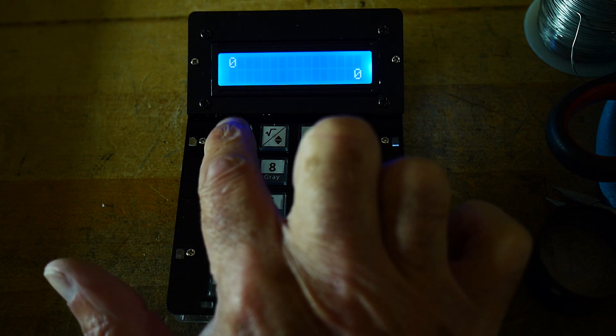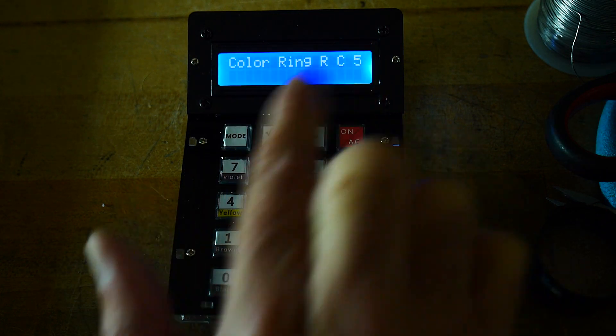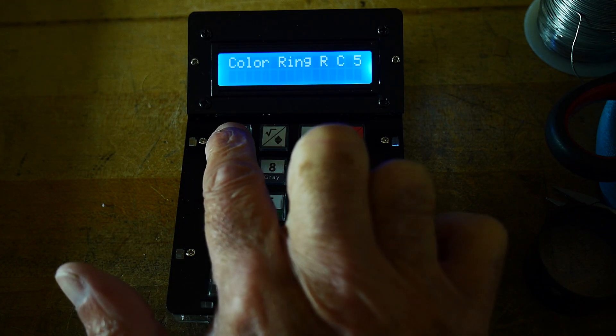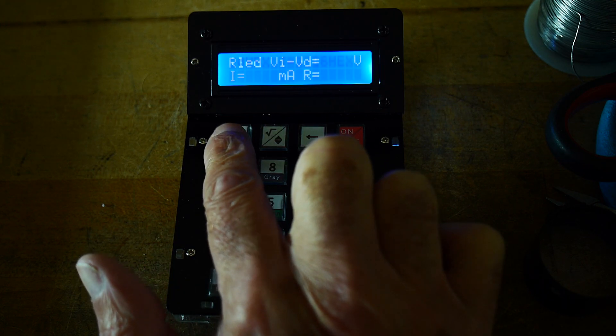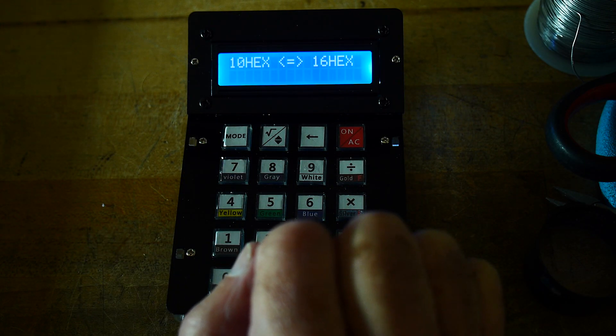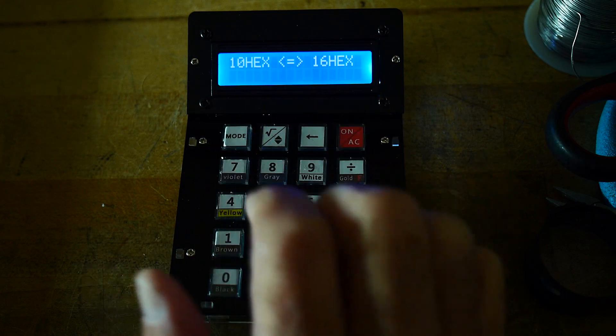Now there's a button called mode. And mode, it'll say color ring RC5. Mode, it'll say RLED. And you go mode 10 hex 16 hex. So let's start with this one.